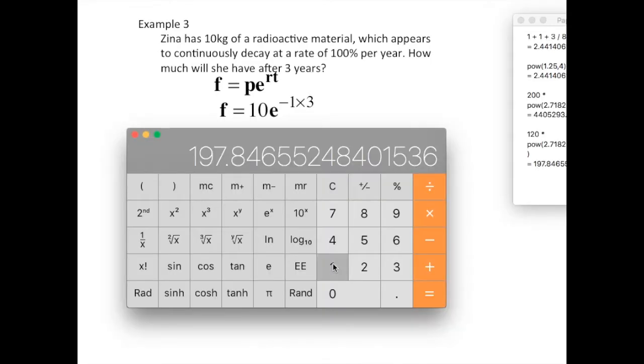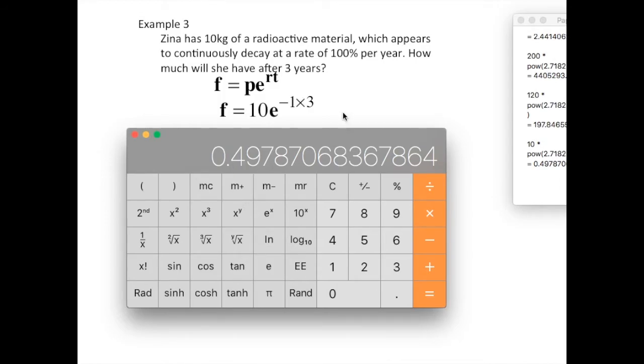And again, you calculate the time. 10 times e to the power of negative three. So three negative equals 0.4978.